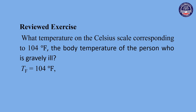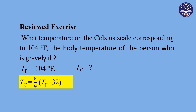The temperature is 104 degrees Fahrenheit. The formula is Tc equals 5 over 9 times the quantity Tf minus 32. In this case, Tf is 104 degrees Fahrenheit, and we apply the formula to find the Celsius temperature.